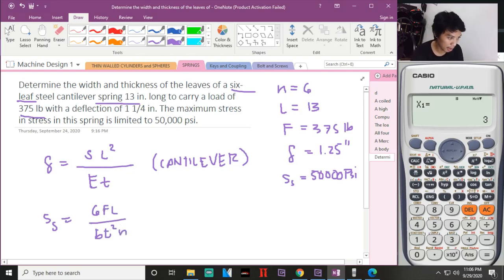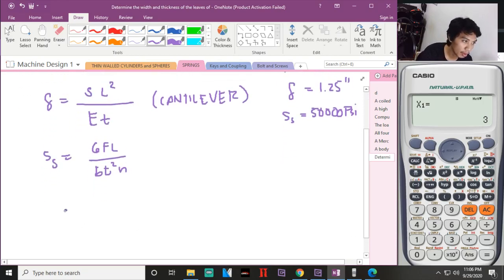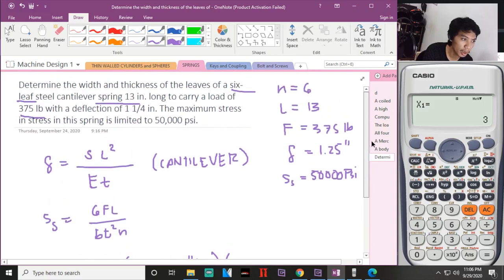Let's find the deflection first. Deflection given is 1.25 inch. Is s given? Yes, 50,000 psi. Is L given? Yes, that is 13 inches long.